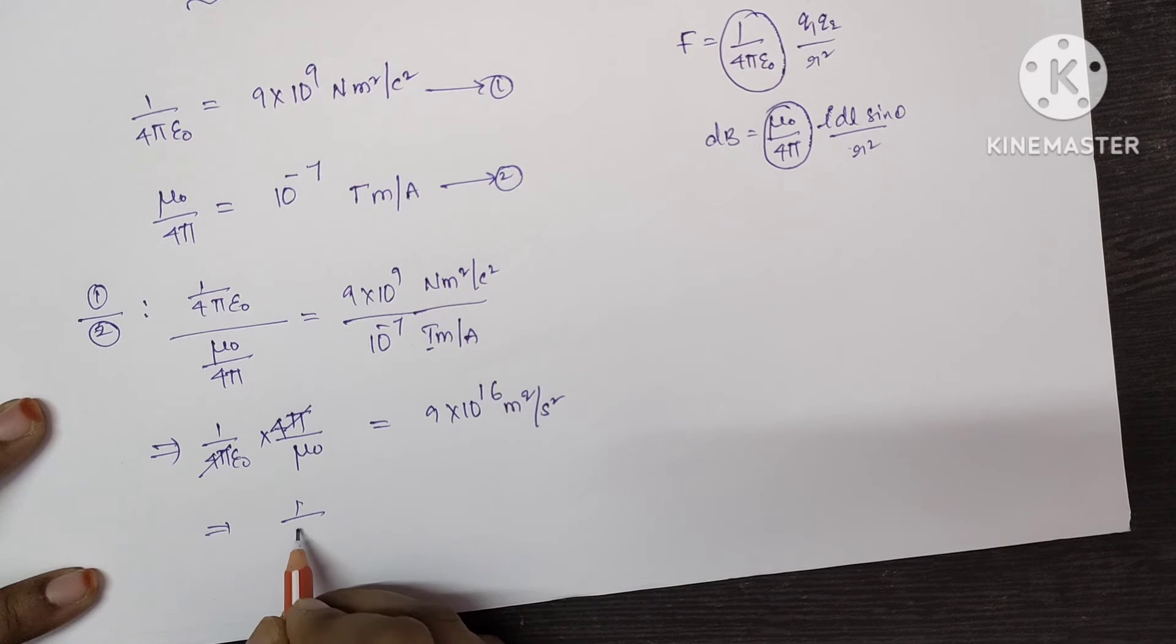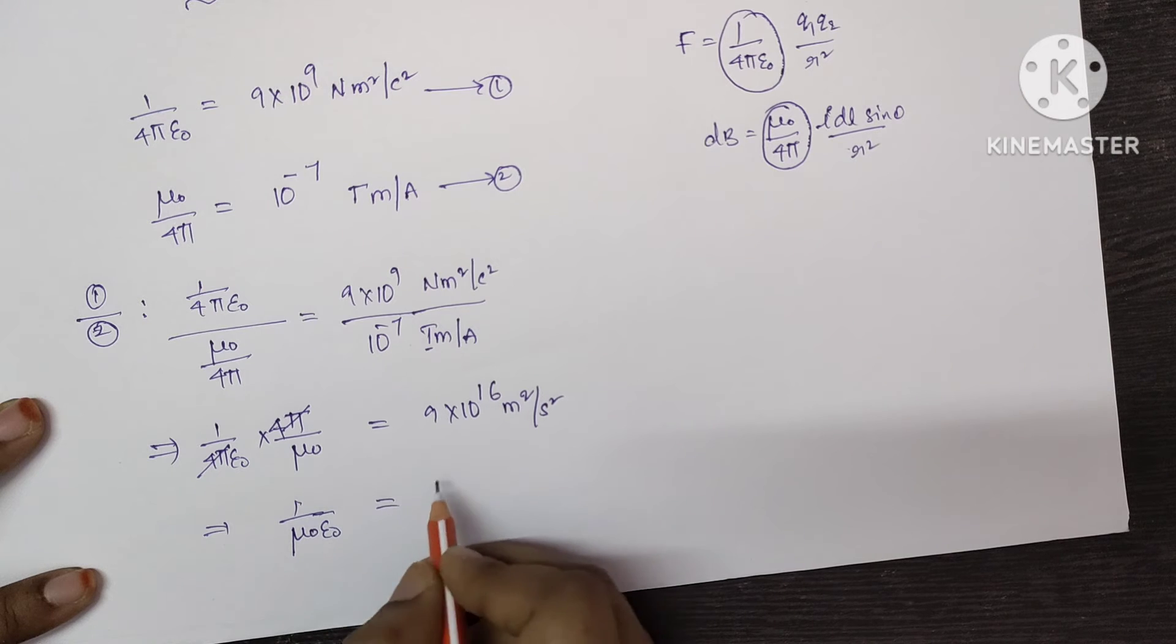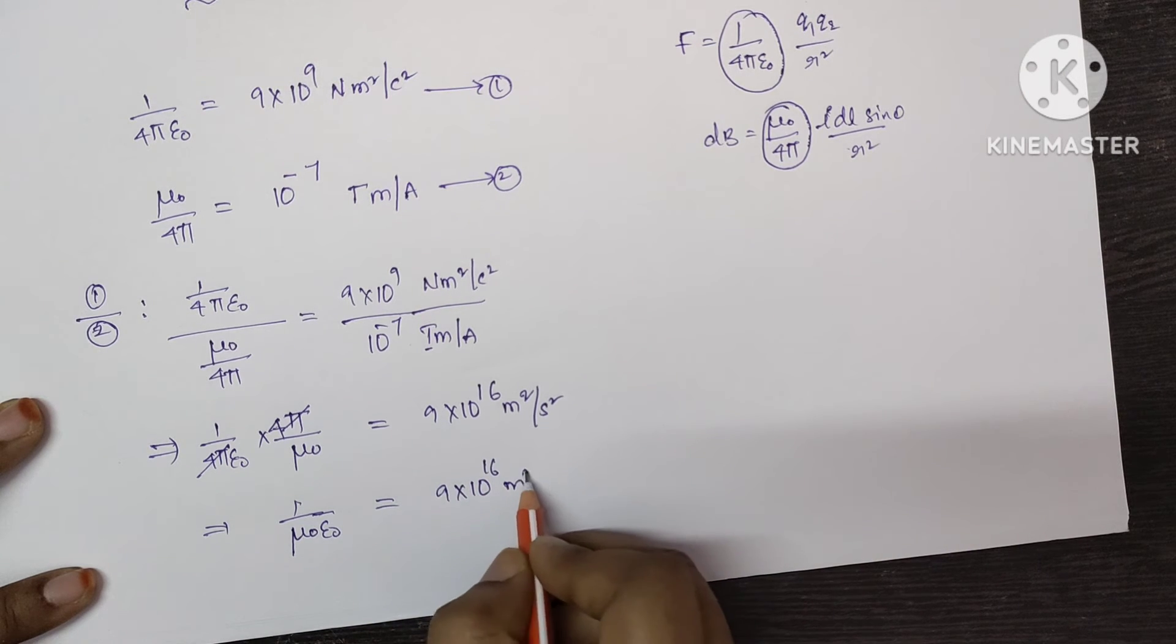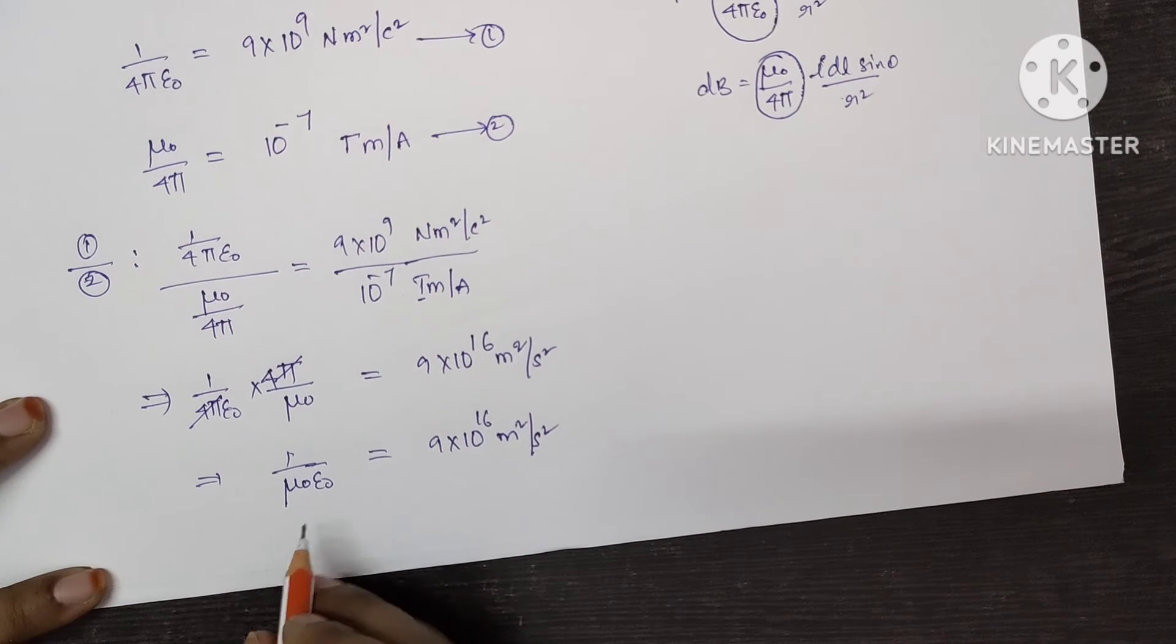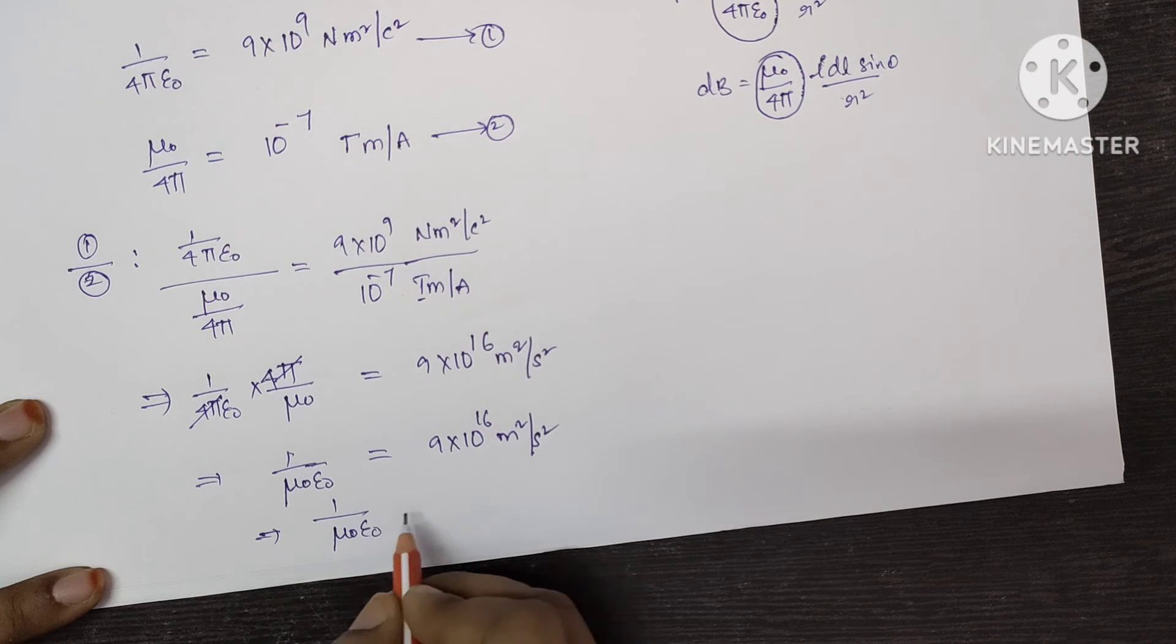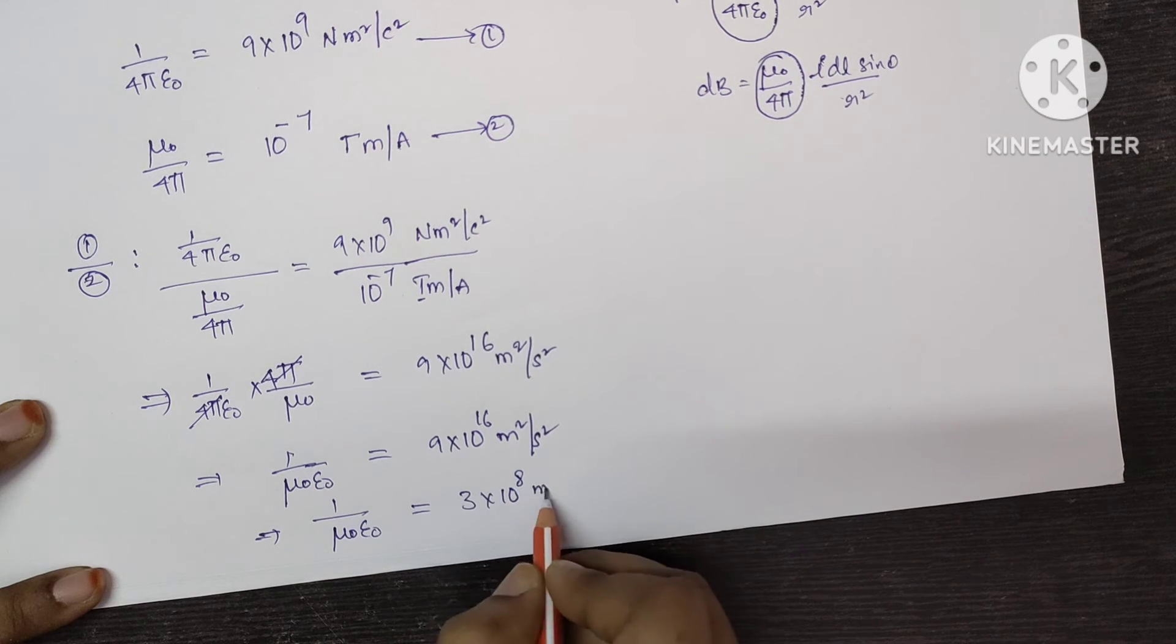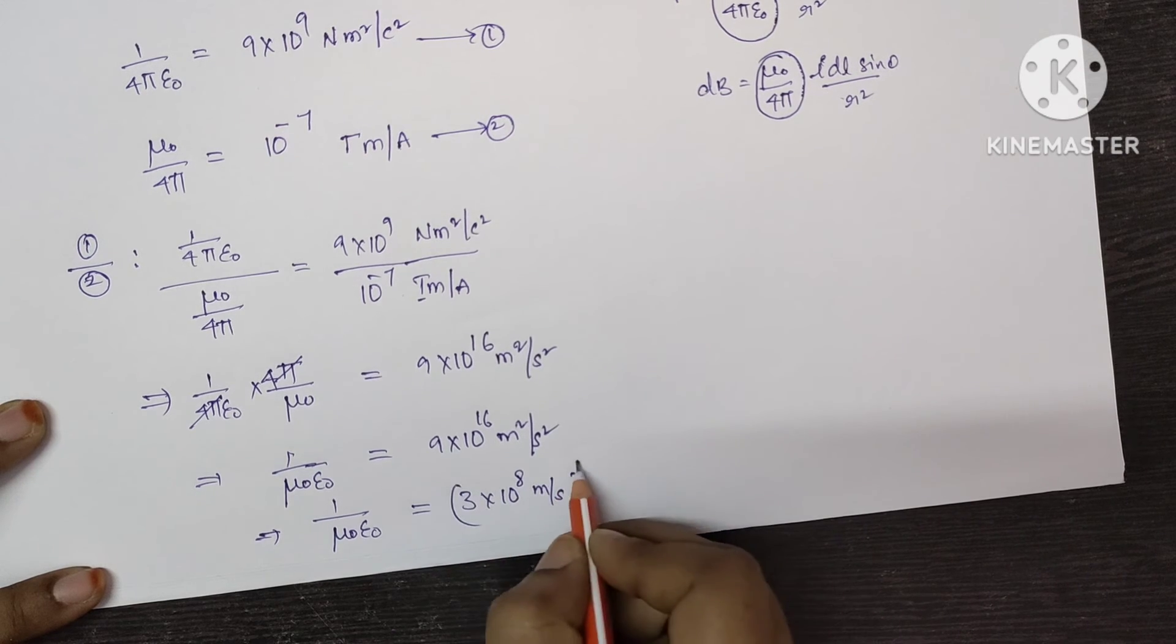The remaining terms 1 by mu 0 epsilon 0 which is equal to 9 into 10 power 16 meter square per second square. So this can be written as 1 by mu 0 epsilon 0 equal to 3 into 10 power 8 meter per second whole square.